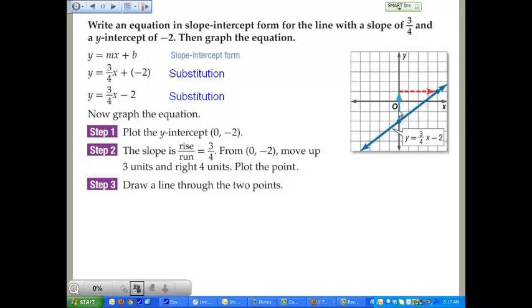We plotted the y-intercept at 0, negative 2. After we did that, we found the slope, the rise of 3 and the run of 4. So it went up 1, 2, 3, and we ran 1, 2, 3, 4. We put a dot there and we connected the two dots with a line. Easy, easy math. Slope intercept form is a great friend for plotting the graphs of linear equations.